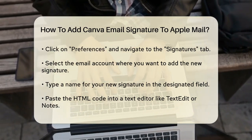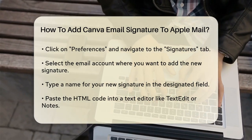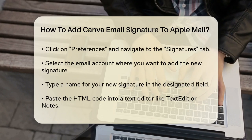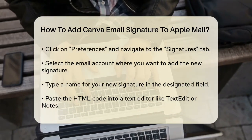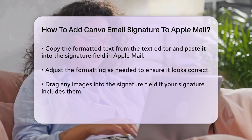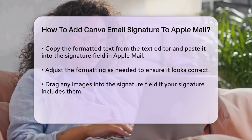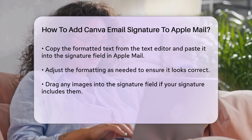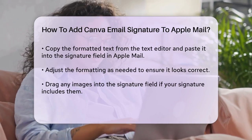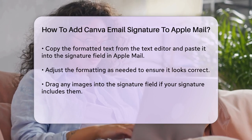Now, you need to paste your Canva signature into Apple Mail. However, Apple Mail doesn't allow you to paste HTML code directly into the Signature field. To get around this, you can copy the HTML code from Canva and paste it into a text editor like TextEdit or Notes. Open TextEdit or Notes, paste the HTML code, and then copy the formatted text. Go back to the Mail app and paste this formatted text into the Signature field. You might need to adjust the formatting slightly, but most of the design should carry over.